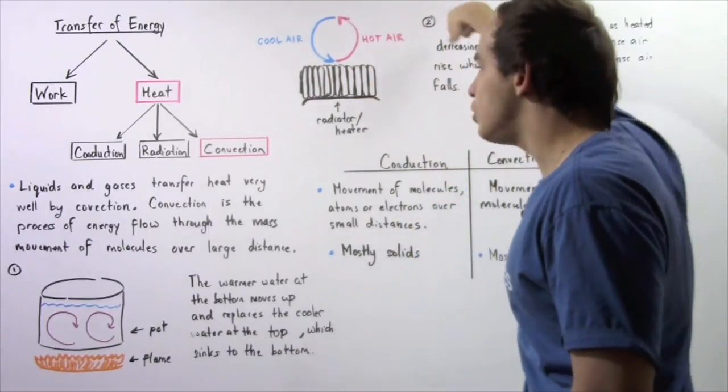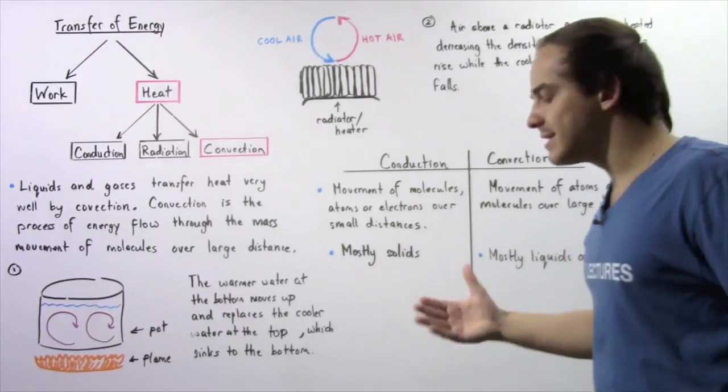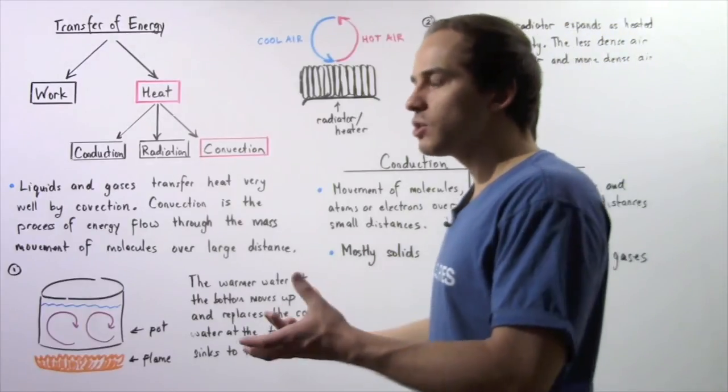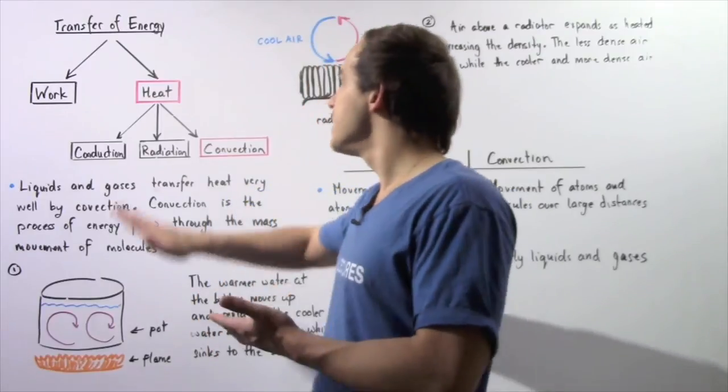This cycle will continue taking place. Air above the radiator expands as heat is decreasing the density. The less dense air rises while the cooler and more dense air falls. This process of the movement of molecules and atoms as a result of a difference in temperature is known as convection.